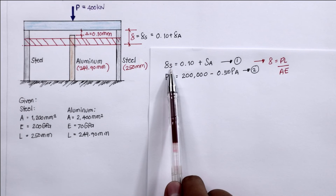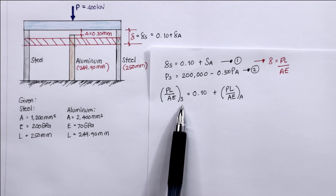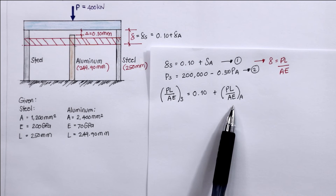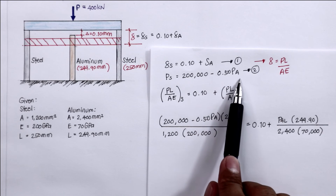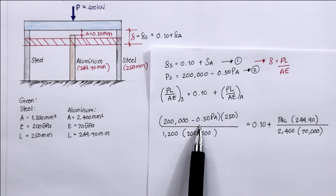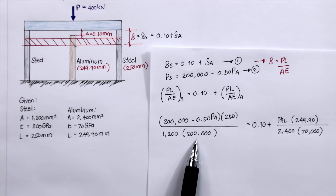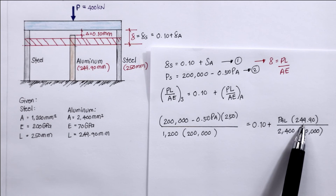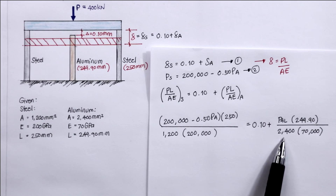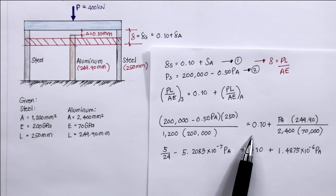Using Equation 1 with the deformation formula PL/AE: PL/AE for steel = 0.10 + PL/AE for aluminum. Substituting values — force of steel: (200,000 − 0.50 PA), length of steel: 250 mm, area: 1200 mm², E_steel: 200,000 MPa — equals 0.10 plus force of aluminum PA (unknown), length of aluminum: 249.90 mm, area: 2400 mm², E_aluminum: 70,000 MPa.